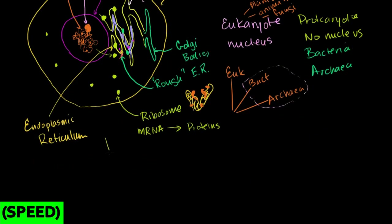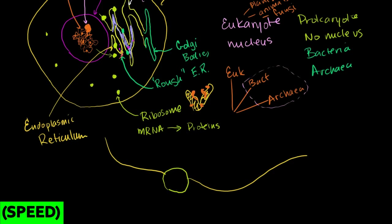Let me draw a blow-up of that. Here is the membrane of the endoplasmic reticulum with a ribosome attached — this is the rough endoplasmic reticulum. mRNA comes in and gets translated into proteins. As the amino acid chain is built up, it pops out on the inside of the ER membrane. Even though the mRNA is on the outside, because the ribosome is attached to the membrane, the protein shows up on the inside. The protein then folds up and travels through the endoplasmic reticulum all the way to the Golgi bodies.